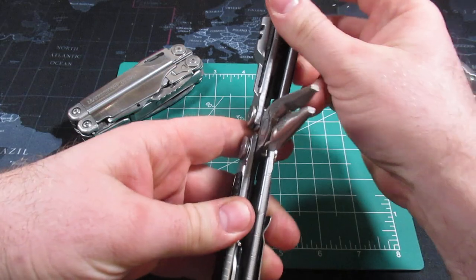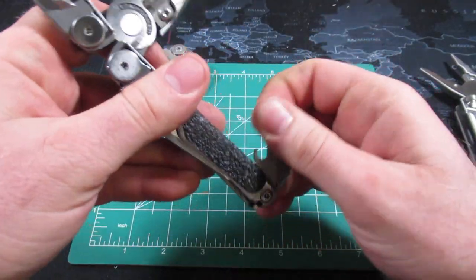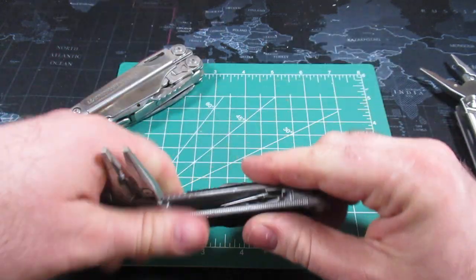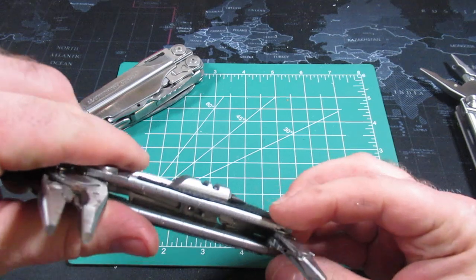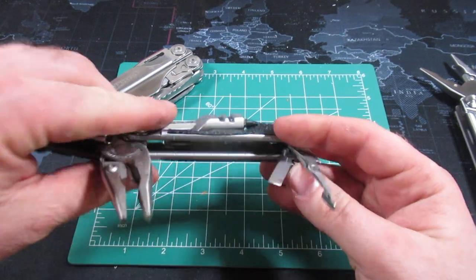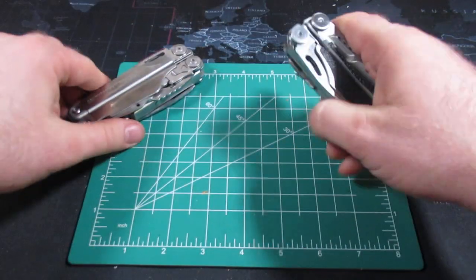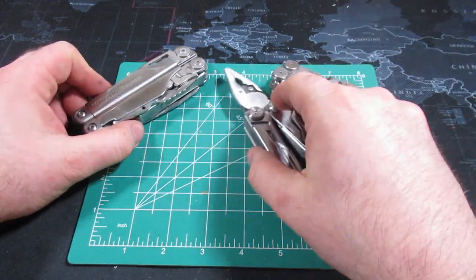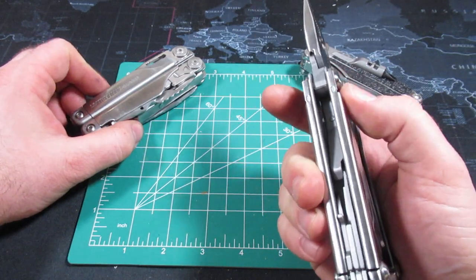On the Leatherman Wave, you have this combination tool, the bit driver, and then on this side you've got the micro driver, you've got the scissors, and you have the large screwdriver. So on the Captain, they sort of majored on the little bit larger screwdrivers in that department.